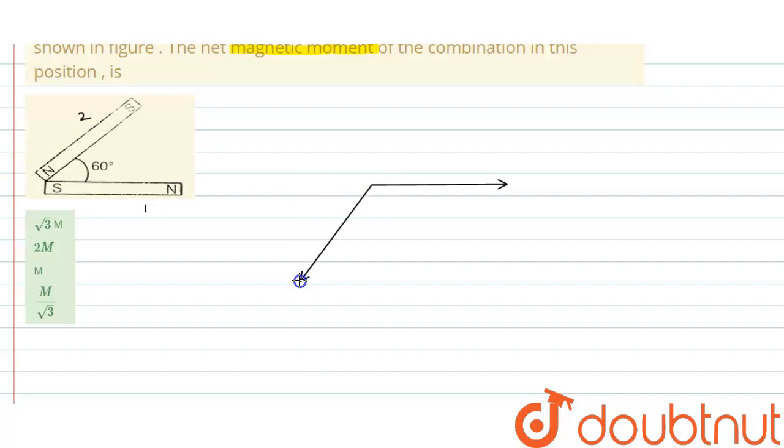So this is magnetic moment M1 and this is magnetic moment M2. Since this angle is 60 degrees and this angle is 60 degrees, the angle between M1 and M2 is 120 degrees.